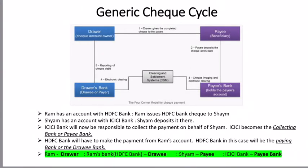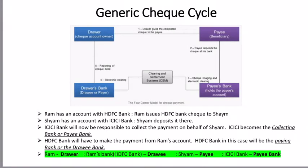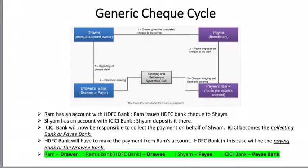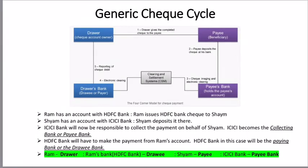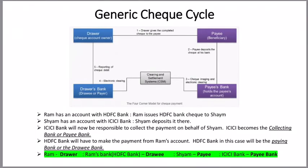So, Ram is the drawer and Shyam is the payee. HDFC bank is Ram's bank, so the payment has to go from this particular bank — HDFC bank in this case becomes the drawee. And ICICI bank, which helps Shyam collect the payment from HDFC bank, is the collecting bank or the payee bank. HDFC bank is also called the drawee, and once the payment is settled, HDFC bank also becomes the paying bank.